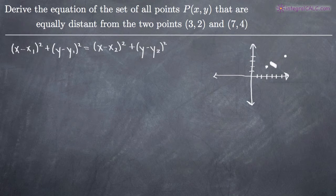The set of points that are going to be equally distant from both of these points is going to be the perpendicular bisector of this line segment.